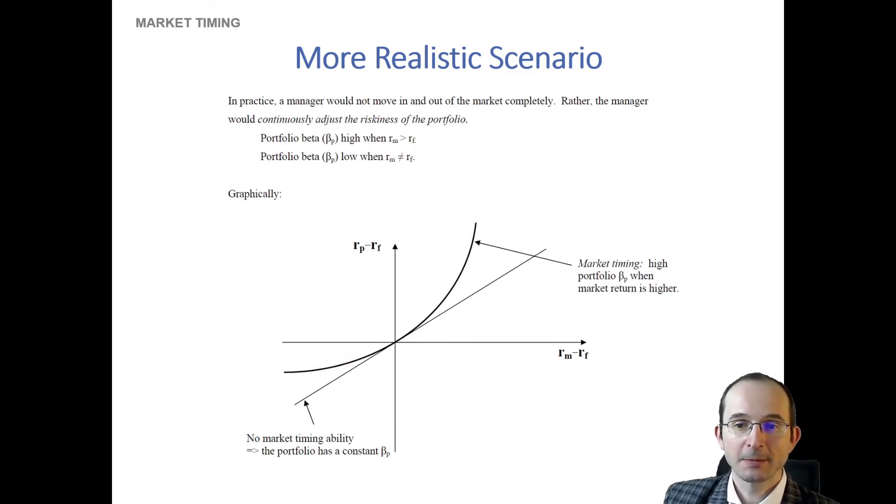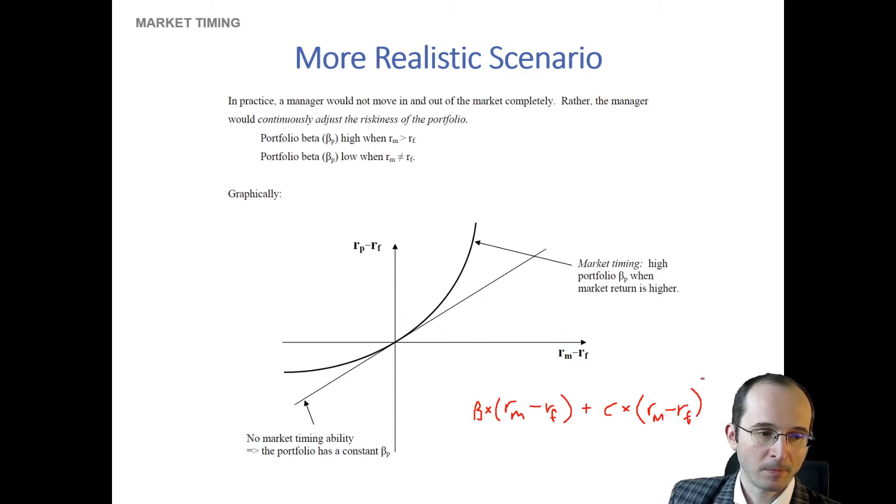So how can you actually test for this non-linearity in beta exposures? Usually it's done with a regression analysis, so we can either test for the presence of an indicator variable, or we could look at a return squared term. Of course, when we estimate the market exposure of our portfolio, we're just going to run a linear type of term for CAPM regression. What we can do is we can actually then also add a nonlinear term, and that would actually then pick up this idea of a nonlinear response to market performance.